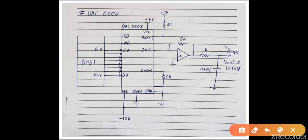Hello friends, welcome back to my YouTube channel. Today we are going to see interfacing of DAC with 8051 microcontroller. DAC, the digital to analog converter, is a widely used device to convert digital pulses into analog signal. This is the interfacing diagram of DAC 0808 with the 8051 microcontroller.